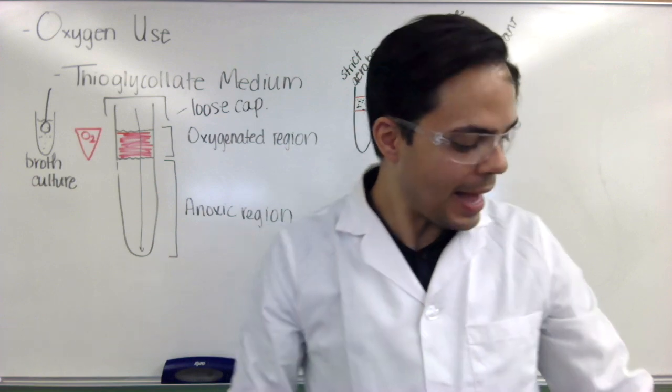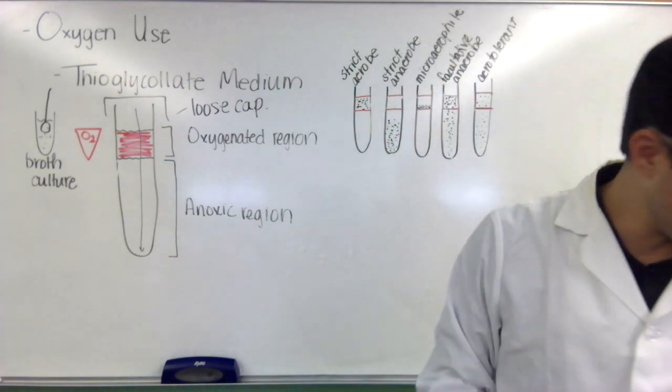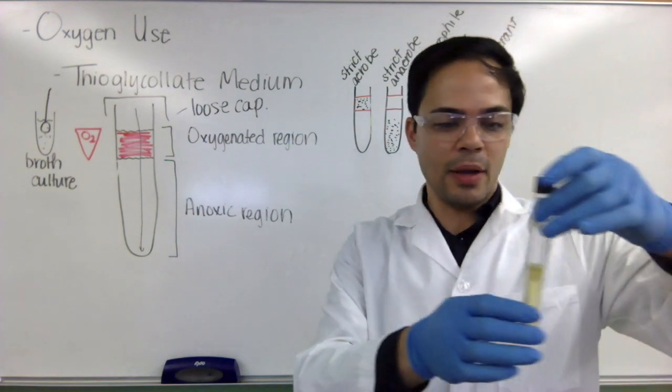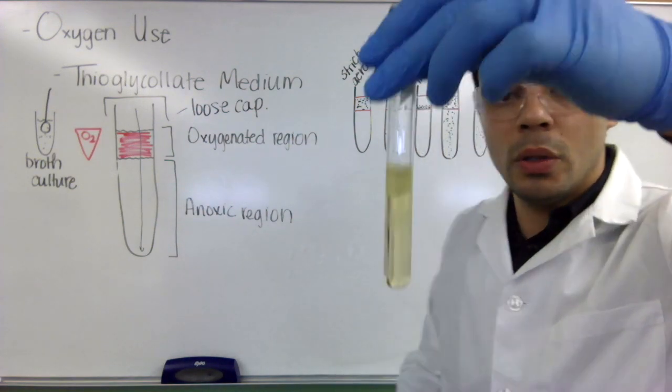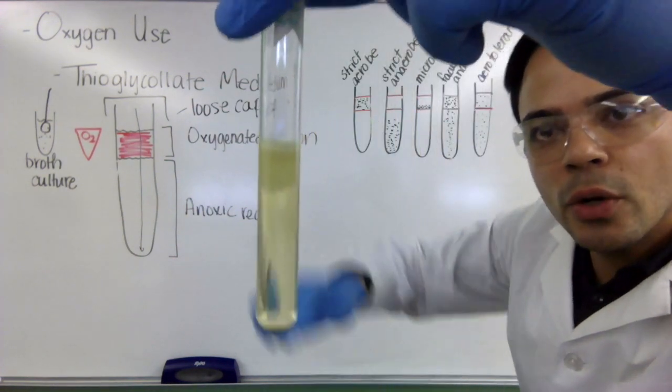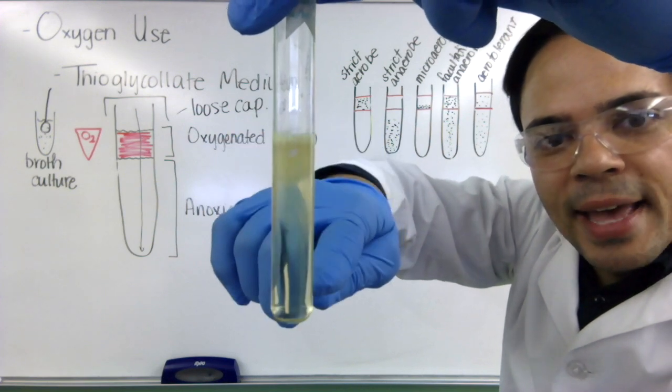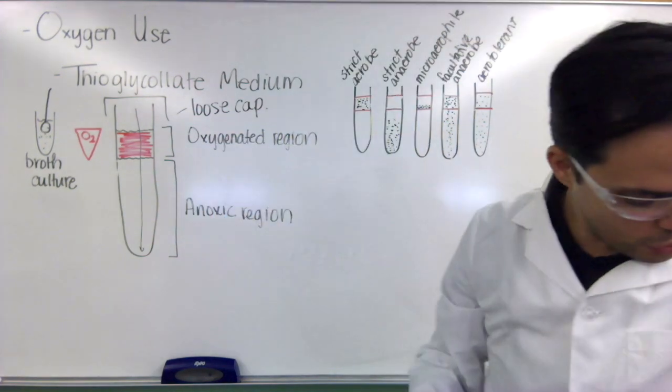And when you come back, what you'll find are the different growth patterns for whatever microbe you have inoculated. Now here's an example here of a strict aerobe. So you can see that the growth is only in the oxygenated region, but not the anoxic region. So that's your strict aerobe.